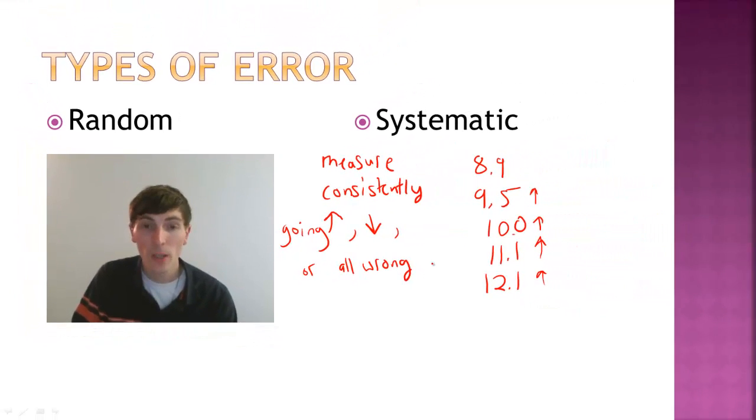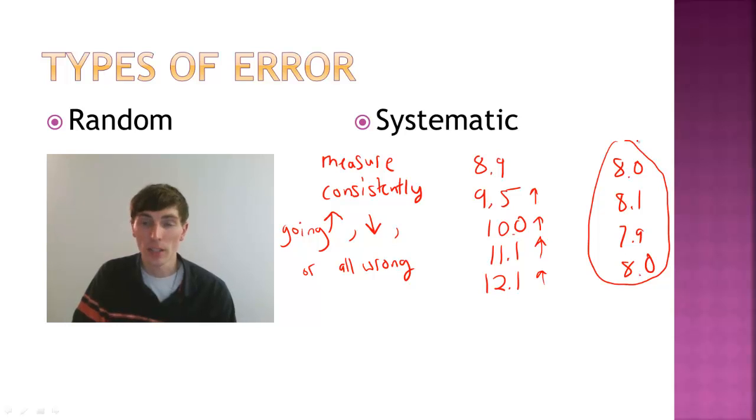What do I mean by that? Well, let's say I take that same mass, and just like a second ago, we looked at that example. It reads 8.0, 8.1, 7.9, 8.0. So obviously there's something wrong with our instrument. We're getting consistent results. We're getting precise numbers. But these numbers here, they're all wrong. They're systematically all wrong. So that would be another example of a systematic error.